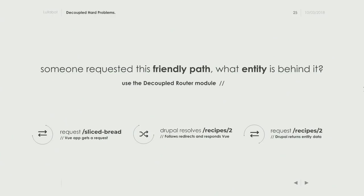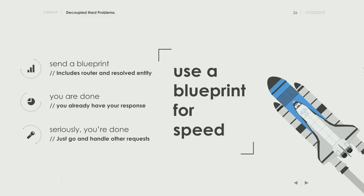At this point, someone might be cringing about sending a path to Drupal to get the entity URL and then making another request to actually get the entity. You can build a blueprint to fix that — we find old problems again as we crack new ones, so we keep reusing the same principles. Send a blueprint that resolves the path via decoupled router and then requests the entity using a placeholder, combining it into one round trip.